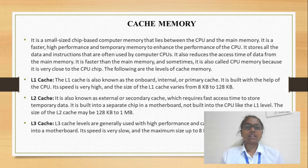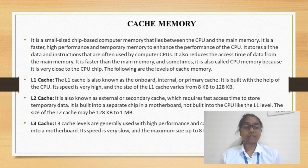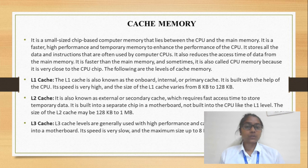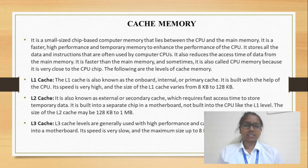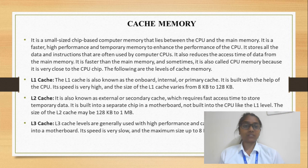The last type is cache memory. Cache memory is a small-sized chip-based computer memory present between the CPU and main memory. This is a faster type of memory. It is a temporary memory that enhances the performance of the CPU. It stores all types of data and instructions that we frequently use, and reduces access time. It is also known as CPU memory because it is very close to the CPU. Based on size and speed, it is divided into different levels: level 1 cache, level 2 cache, and level 3 cache.